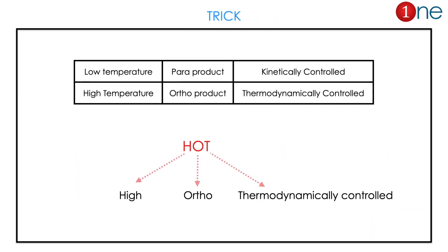To avoid confusion, I provide a trick. The acronym given here is HOT. H stands for High, O stands for Ortho, T stands for Thermodynamically controlled. So: high temperature gives ortho position, thermodynamically controlled. It is reversed for the other case. Memorize the word HOT for reaction control.